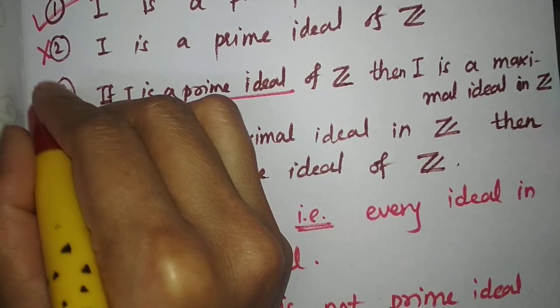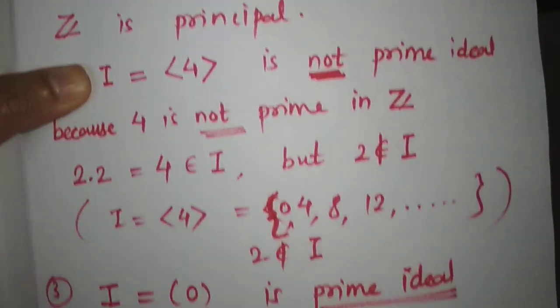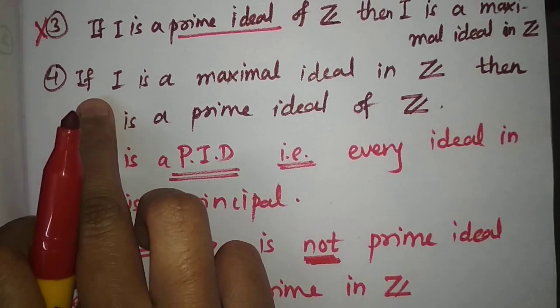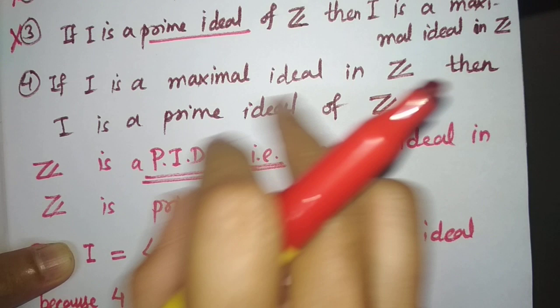Hence this third option is also wrong. This is the counterexample: I equal to the zero ideal. Now the fourth option is: if I is a maximal ideal in Z, then I is a prime ideal of Z.